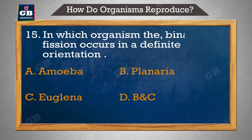In which organism does binary fission occur in a definite orientation? A. Amoeba, B. Planaria, C. Euglena, D. B and C.